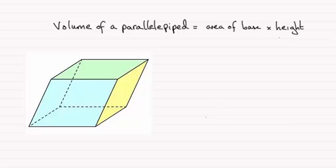Now the volume of a parallelepiped is given by this particular formula. It's equal to the area of the base times the perpendicular height.